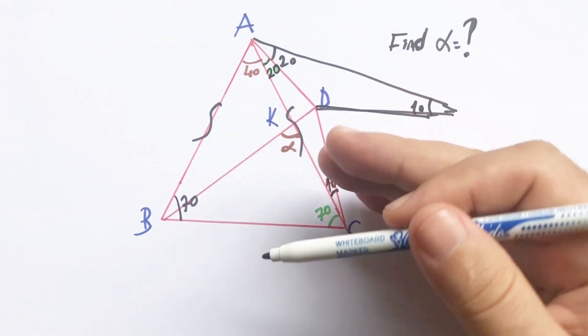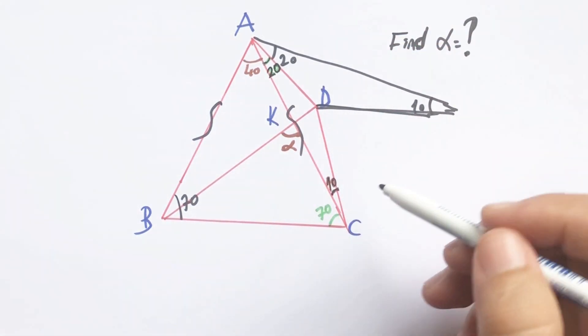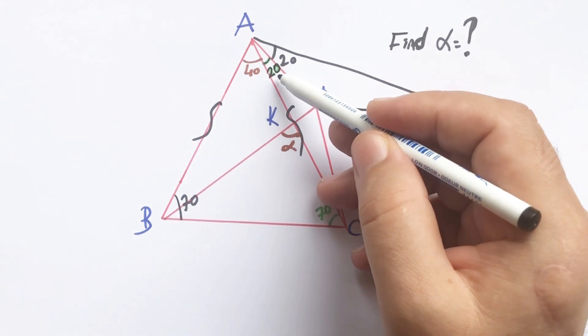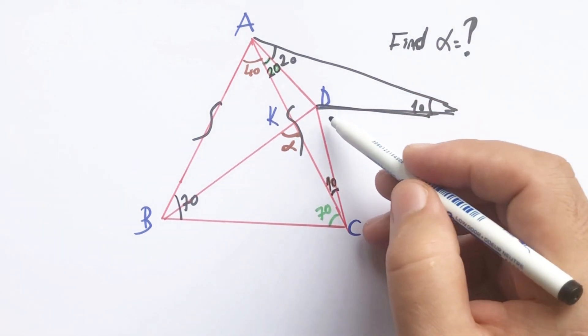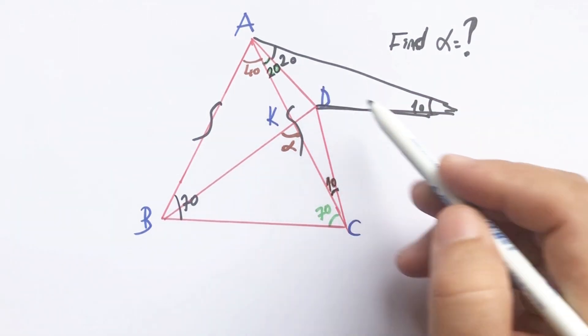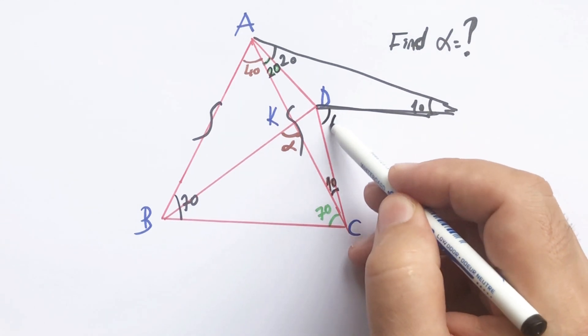If you notice that ADC line is a symmetry line, therefore here must be 60 degrees.